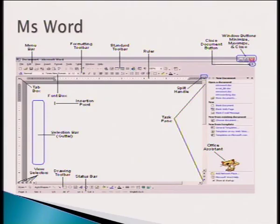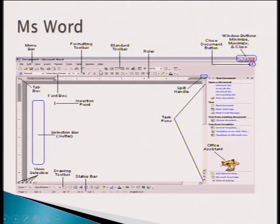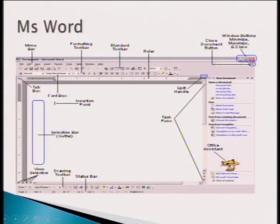With everything that you open in your computer — a program, an icon — it will appear in the Windows format. This is the window for Microsoft Office. The top part, from here up to there, this whole part is called the ribbon. On the ribbon, we find the top part where it says Document 4. This is called the title bar. Once you give your document a name, the name will appear here — in my case, the name is Document 4.